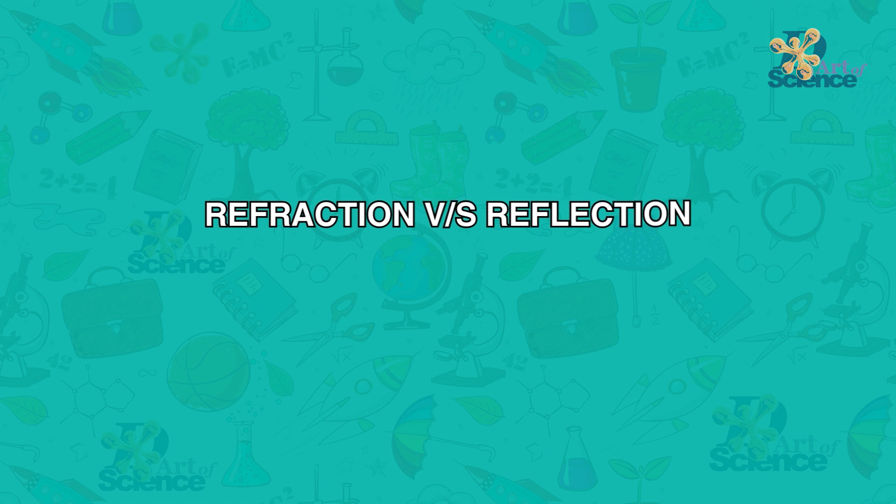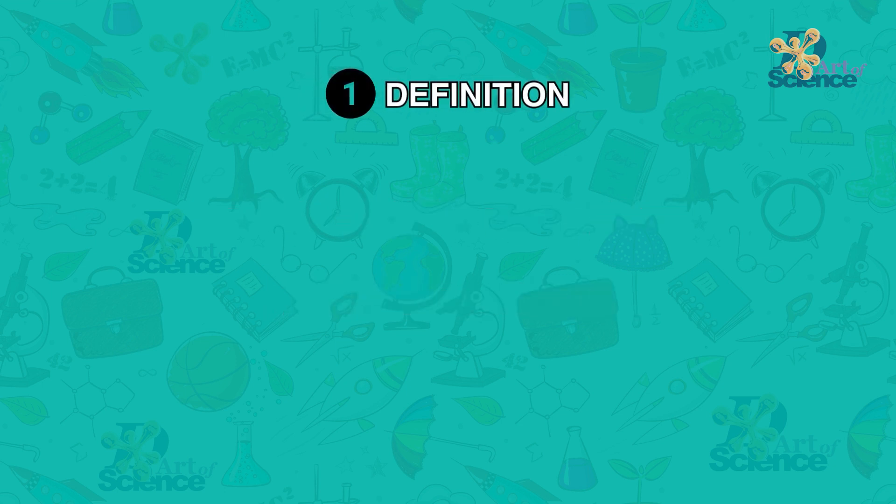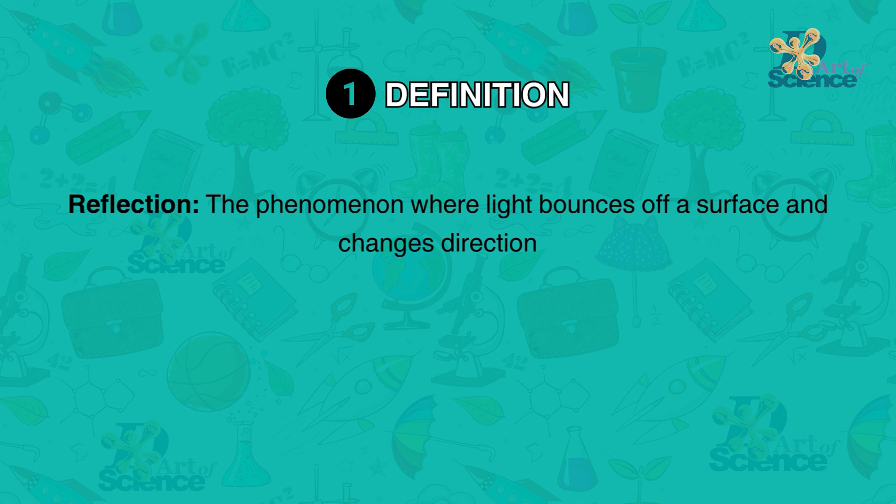We will understand this with six key differences. First is the definition. Reflection is the phenomena where light bounces off a surface and changes direction. The most common example is light reflecting off of a mirror.